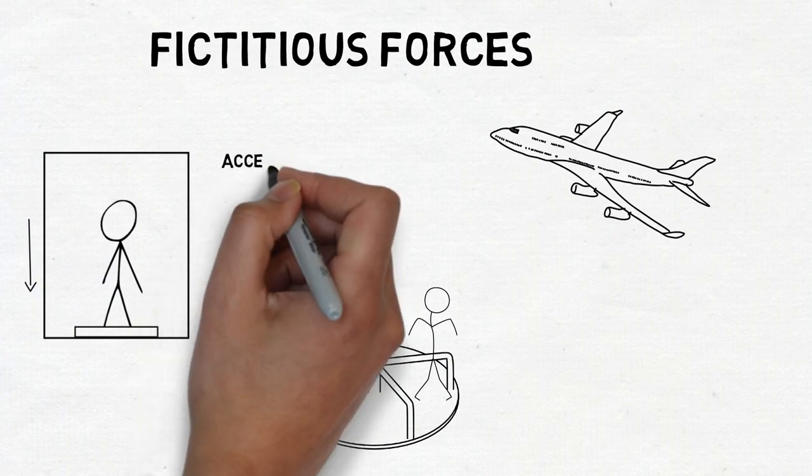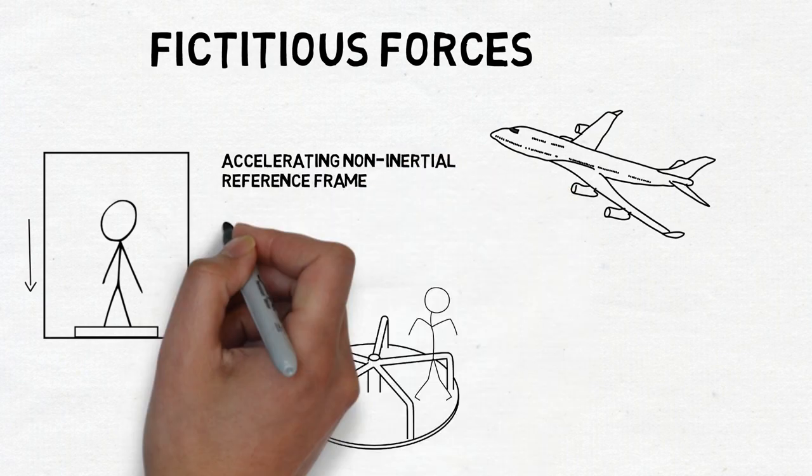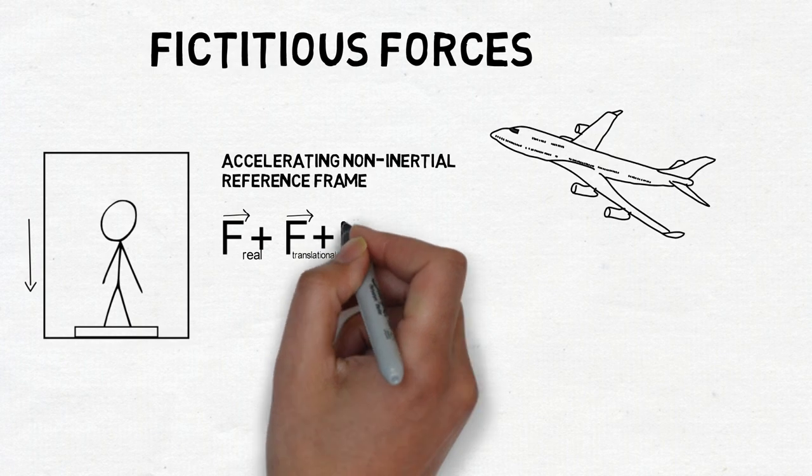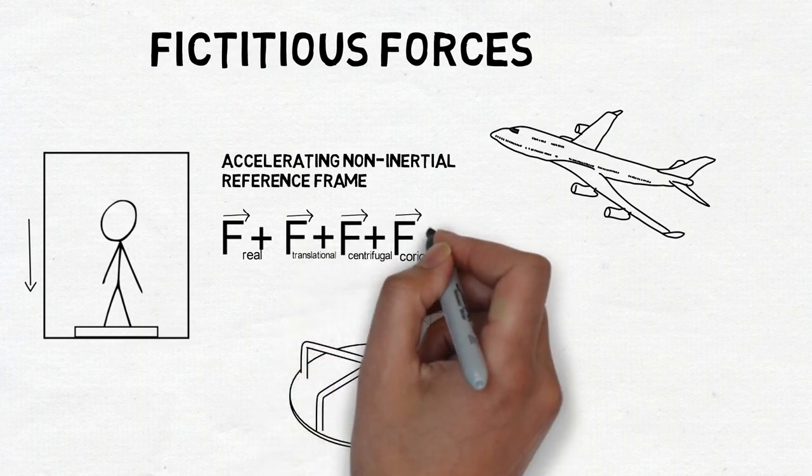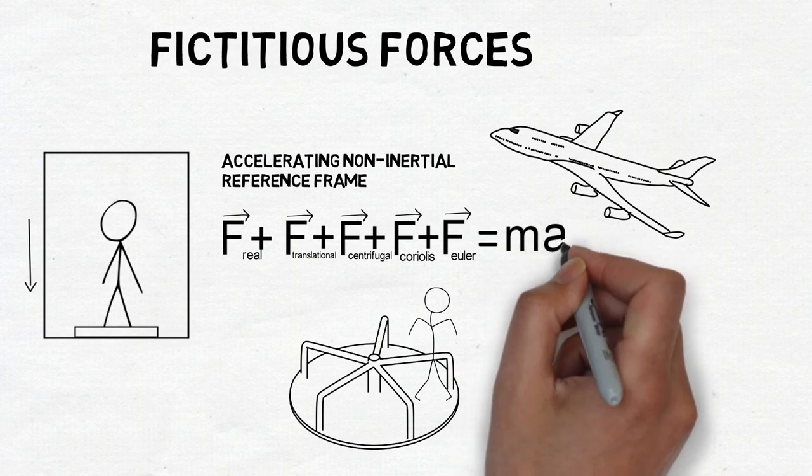If a person in an accelerating non-inertial reference frame wanted to find their acceleration, then we need to add up all the real and fictitious forces together. This is the form that Newton's second law takes in non-inertial frames.